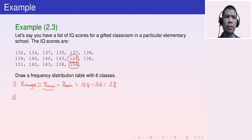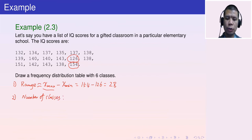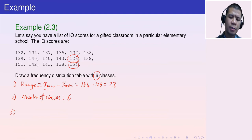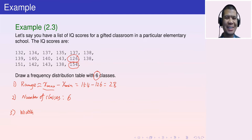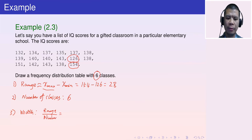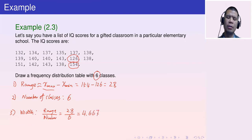Step two: the number of classes is already given as 6. Step three: determine the interval width. Take the ratio: range ÷ number of classes = 28 ÷ 6 ≈ 4.667. This is not a convenient number and is a decimal.